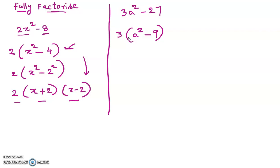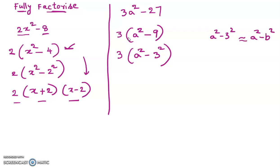But let us see if we can go further, because they asked to fully factorize. a² minus 9 can be written as a² minus 3², which is in the form of a² minus b². This looks similar to a² minus b², which equals (a+b)(a-b). So the full factorization becomes 3(a+3)(a-3).